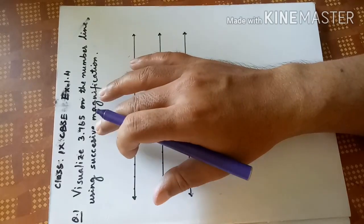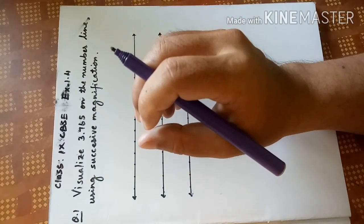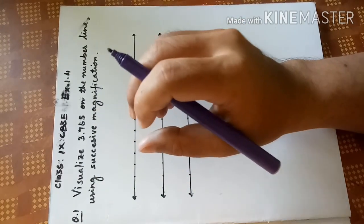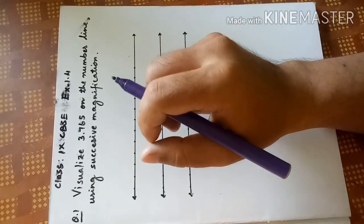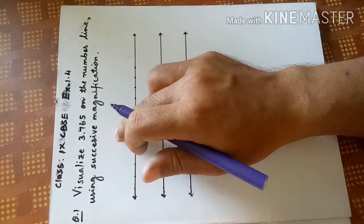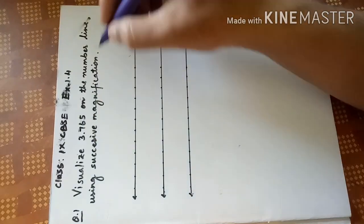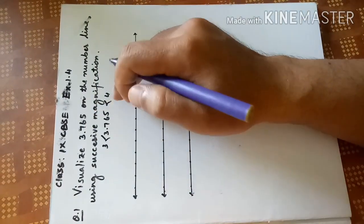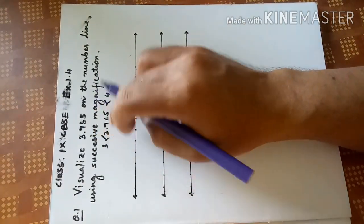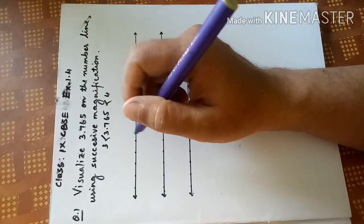First of all, you have to find out the particular given number is between which numbers. Let us see here. The given number is bigger than 3 but less than 4, meaning it is between 3 and 4. So what you are going to do...